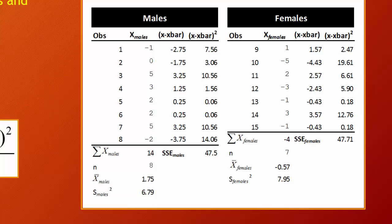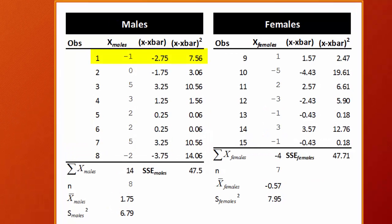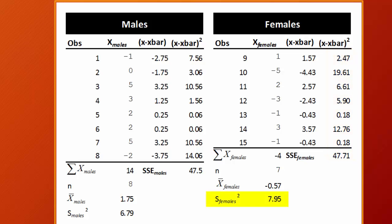We use our means to calculate variances. The variance is the sum of (x_i minus x-bar) squared for all observations, divided by n minus 1. For example, for our first male observation, x equals negative 1, subtract the mean of 1.75 to get negative 2.75, squared gives 7.56 — and so on for every observation. Summing that column gives the sum of squared errors for males of 47.5, divided by n minus 1 equals 7, giving a variance for males of 6.79. For females, the sum of squared errors is 47.71, divided by 6, giving a variance of 7.95.